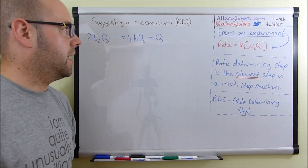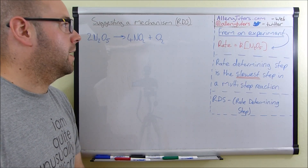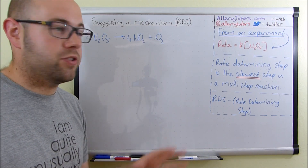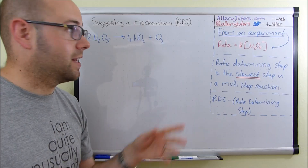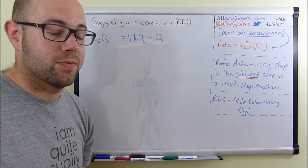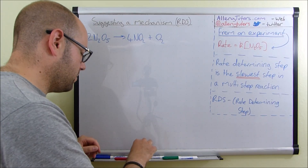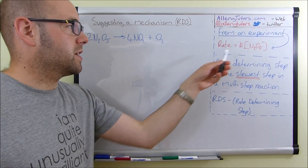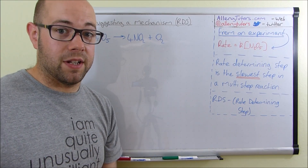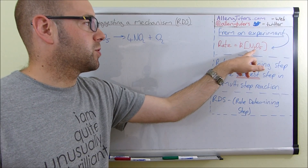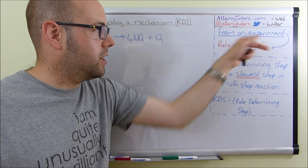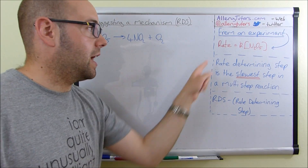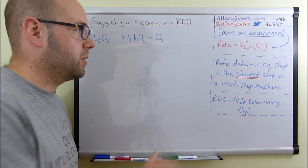We're going to try and develop our mechanism. There are actually two possible mechanisms for this and either one will get the right marks — we can't tell which one is correct just by looking, but we can suggest one, which is why it says 'suggesting a mechanism' rather than 'what is the mechanism.' We're just giving a potential mechanism. The rate expression tells us what species are reacting in the rate determining step. In this case, we must only have one molecule of N₂O₅ in the rate determining step.